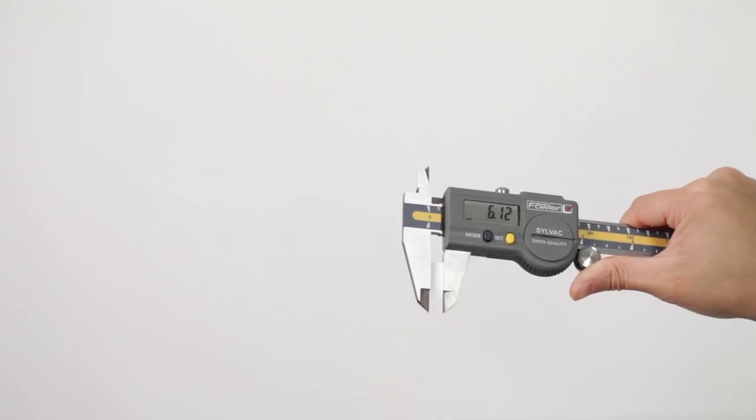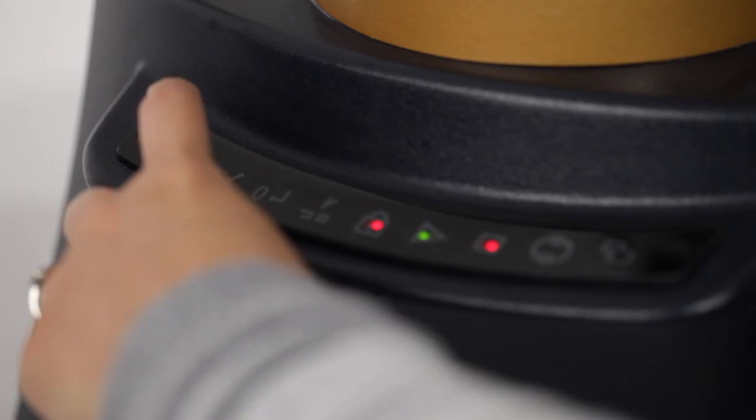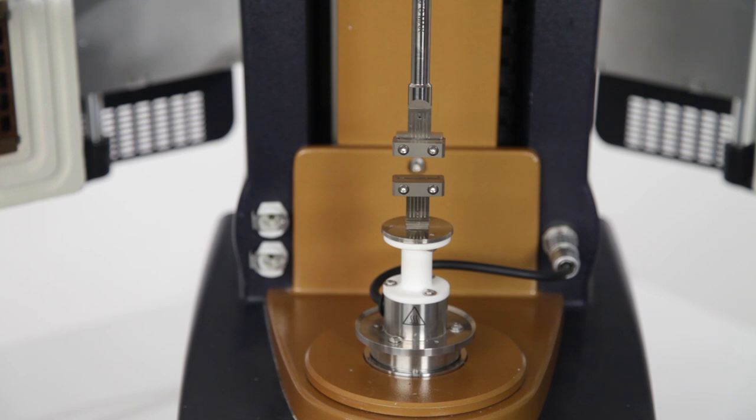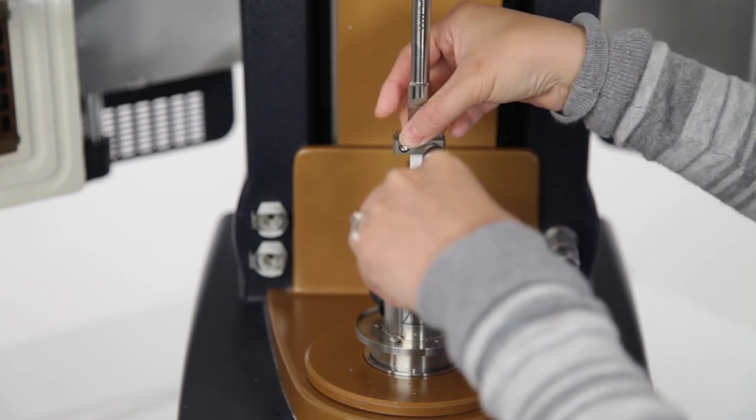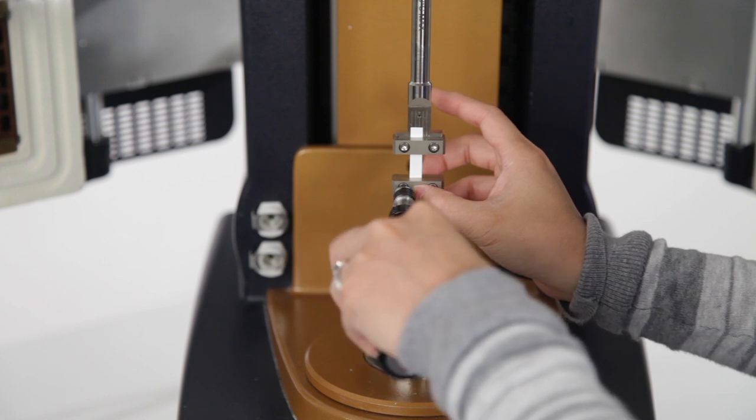Measure and enter the sample width and thickness into the appropriate fields under the geometry file. The sample length value is always measured during a test using the gap signal. Simply raise the instrument head, move the upper geometry to the alignment position, and load the sample into the test geometries. The linear tension clamp is now ready for testing.